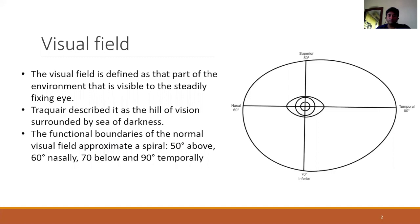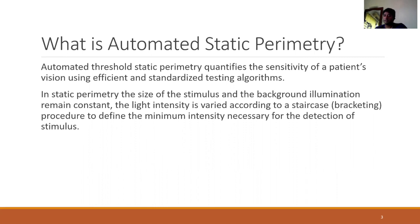What is automated static perimetry? Static perimetry basically quantifies the sensitivity of a patient's visual field threshold using efficient and standardized testing algorithms. The difference between static perimetry and kinetic perimetry is that in static perimetry the background illumination as well as the stimulus sensitivity are altered. Whereas in kinetic perimetry, the location of the stimulus is altered, which helps in charting out isopteras. In static perimetry, the stimulus location as well as the stimulus sensitivity are altered.